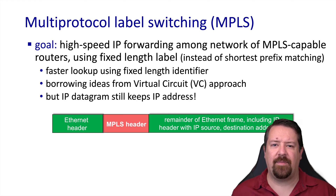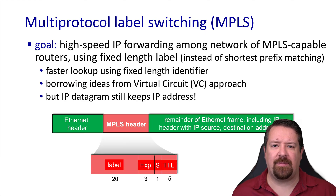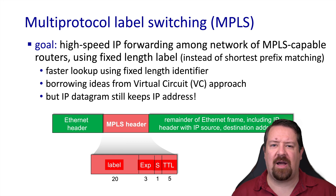The MPLS header is inserted in between the layer 2 header, which could be Ethernet or something else, but outside of the IP header which remains unchanged. Inside that MPLS header we have the label itself and a couple other fields including a TTL for the MPLS layer. Note that the implication here is that the IP TTL is not getting touched at each hop in the MPLS network.